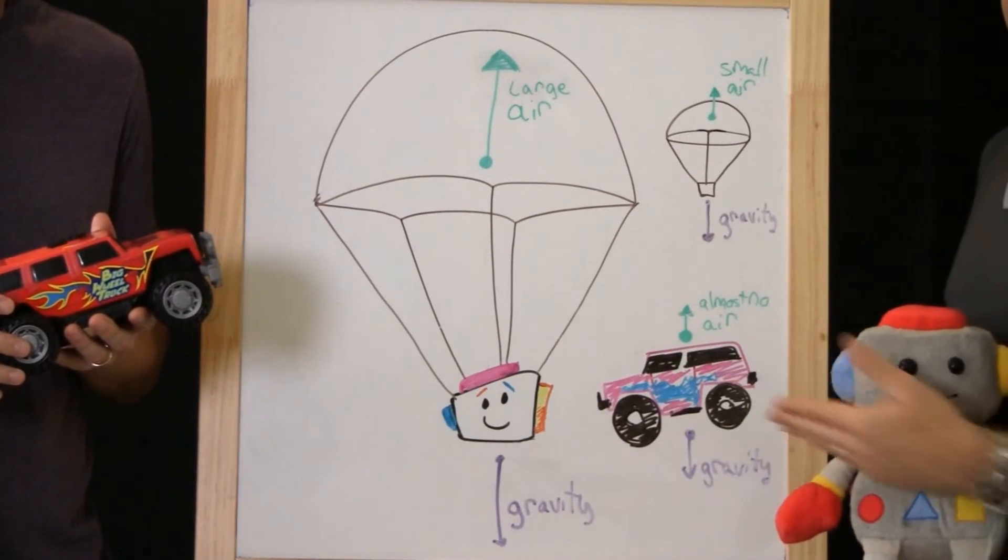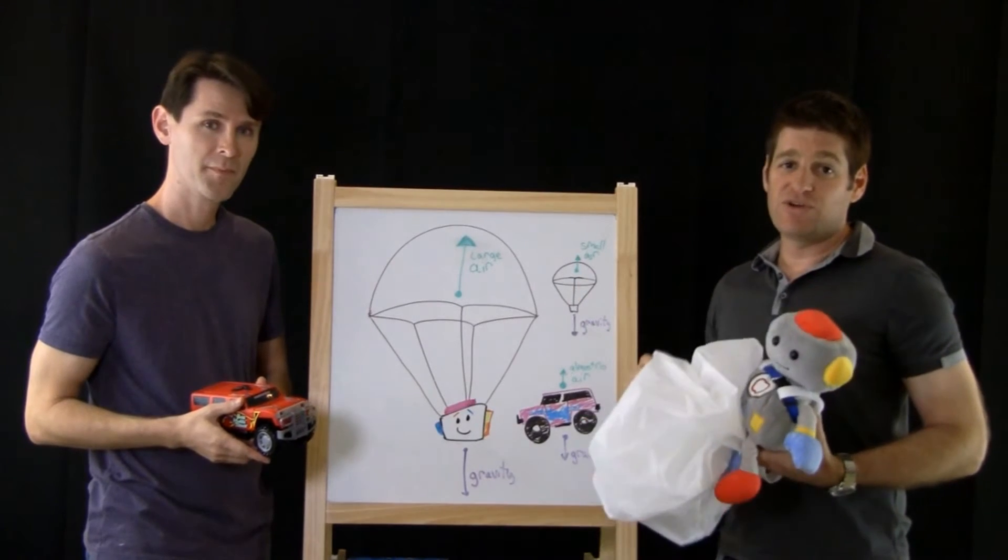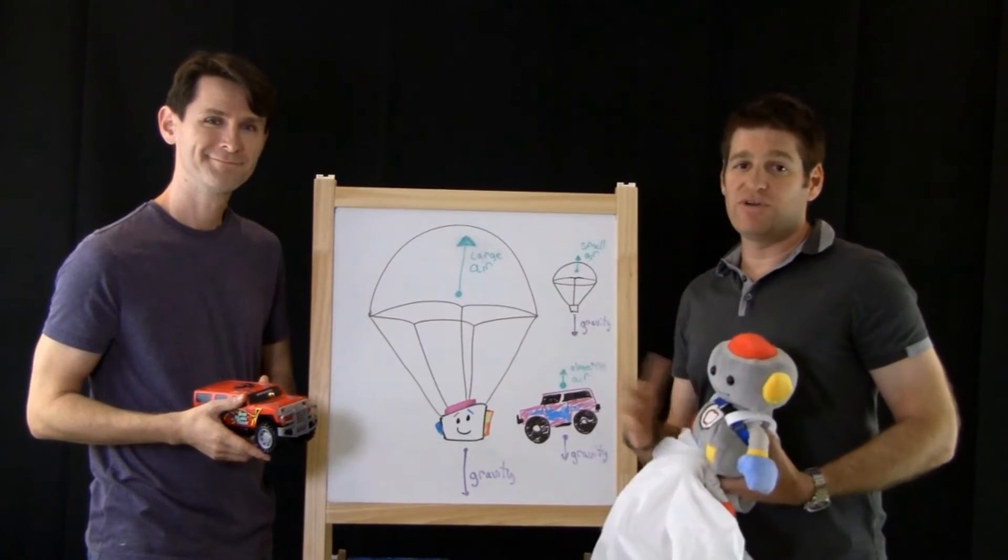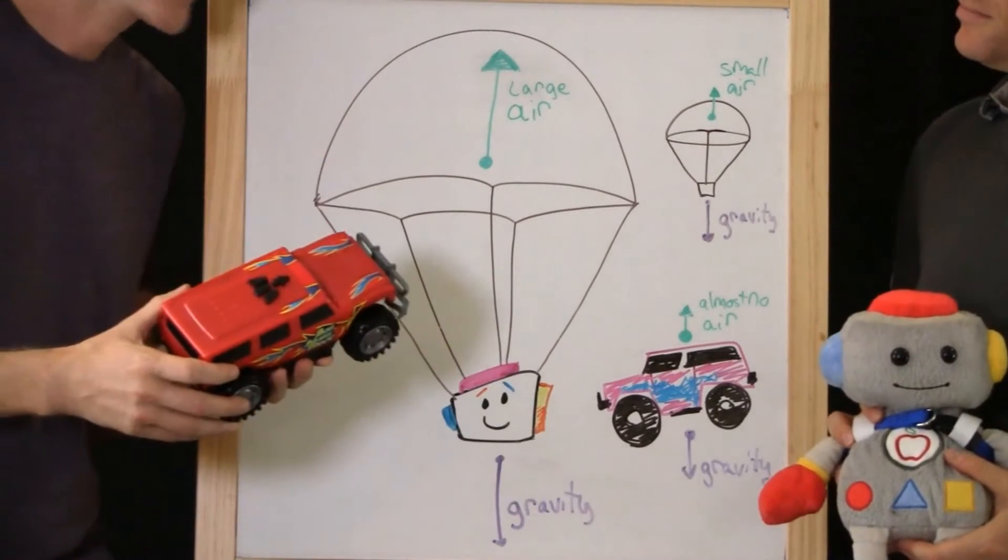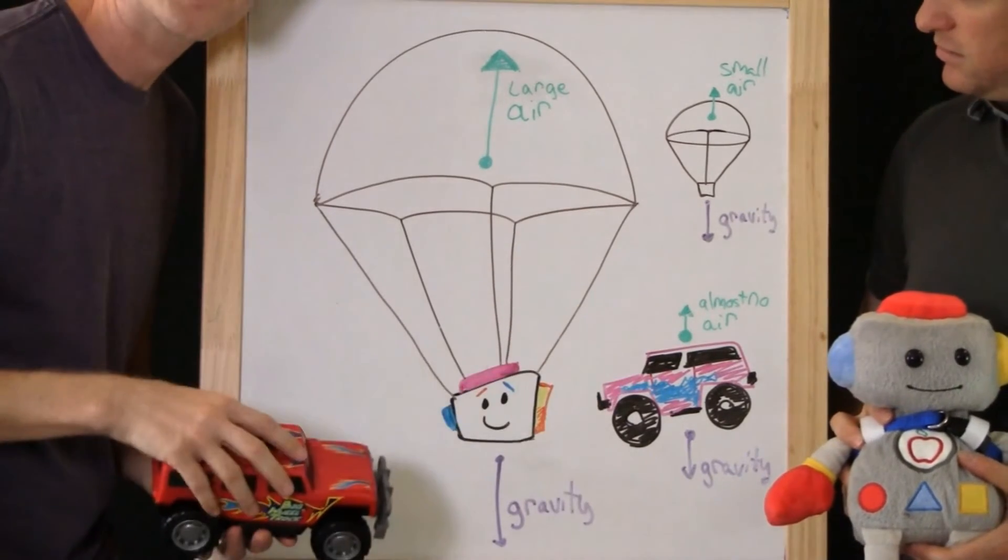Air resistance slows it down to lessen the effect of gravity. So the smaller the parachute, the faster you'll go down. The bigger the parachute, the more air resistance you'll get and the slower you'll go. And if you have no parachute, you almost have no air resistance and you'll fall a lot faster.